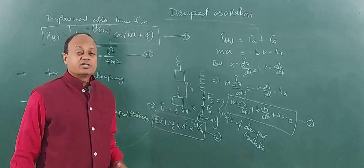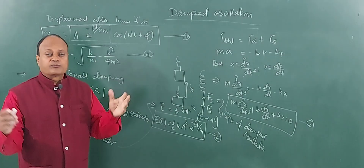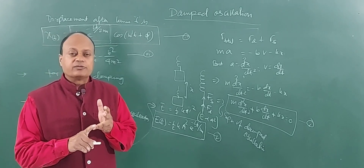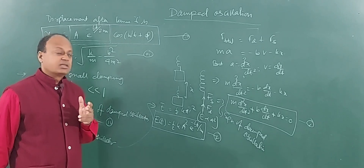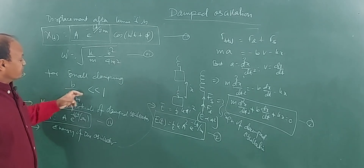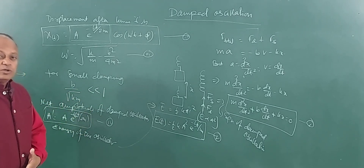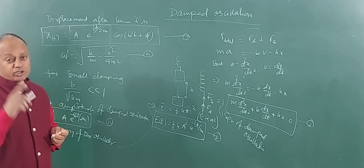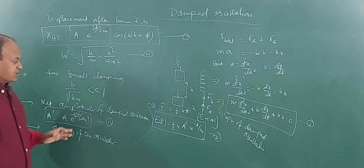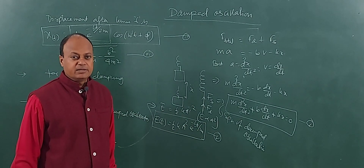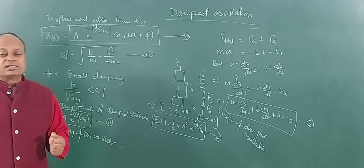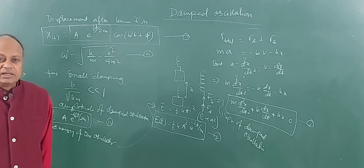So children, we understood the damping constant, the equation of damped oscillation, and the instantaneous displacement. The important condition is b divided by root km should be very small compared to 1. The net amplitude and the energy of the oscillator at a given instant have been discussed. Now, once you have understood it, we will proceed to understand what exactly is forced vibration.